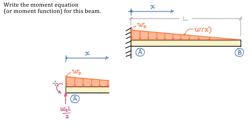I'd also need my reaction, that would be w_0 L over 2 times a distance of L over 3. We're not really focusing on reactions in this video. You'll get w_0 L squared over 6 is the moment reaction of this fixed support.